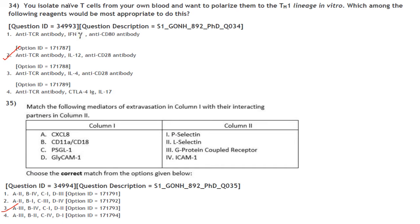You have isolated naïve T cells from blood and want to polarize them to the Th1 lineage in vitro. The most appropriate reagents would be anti-TCR antibody, interleukin-12, and anti-CD8 antibody. Interleukin-12 drives naïve cells to become Th1 cells. Answer is option 2.